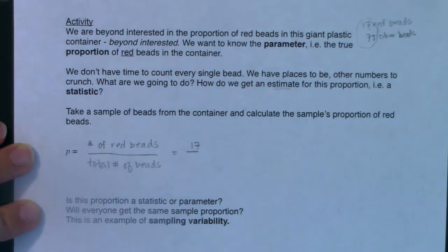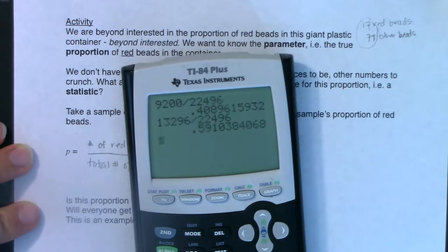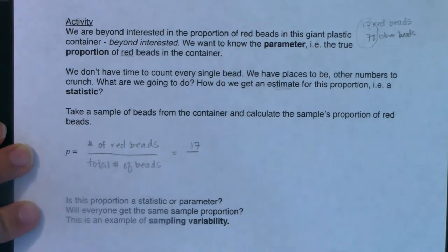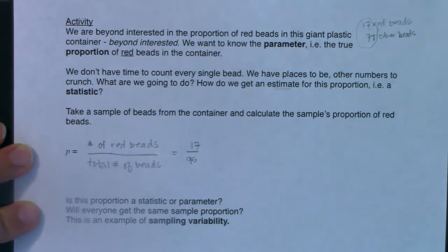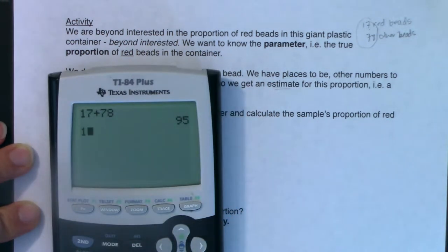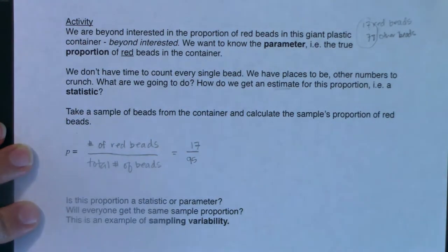So let me go to my trusty calculator here, and we will do 17 plus 78. So we've got 95 beads in total. So if I want to look at my sample proportion, I'm going to do 17 divided by 95 and find out that's about 17.9%.